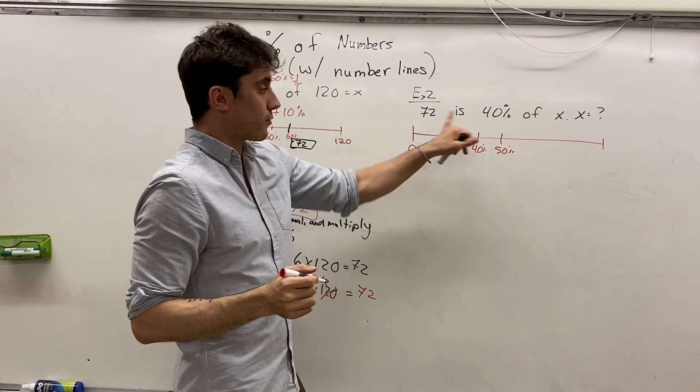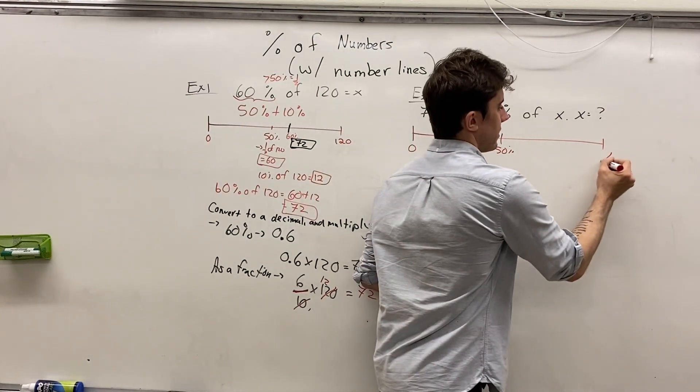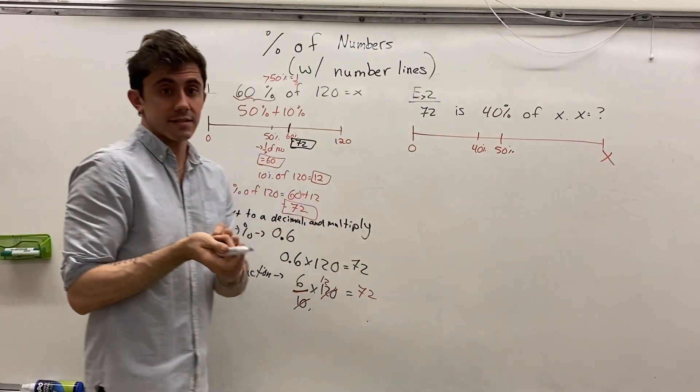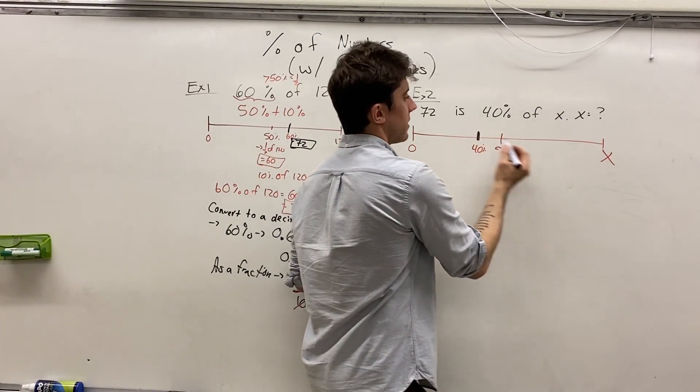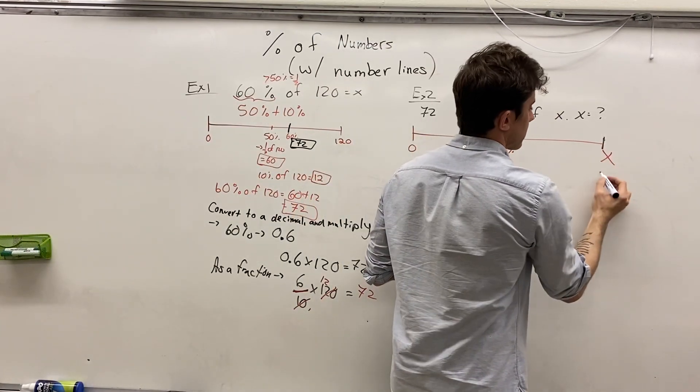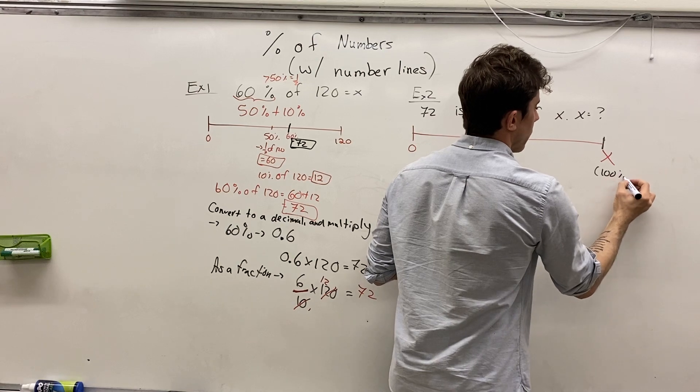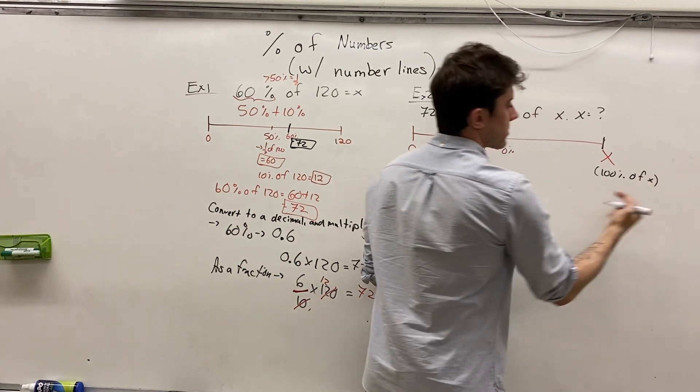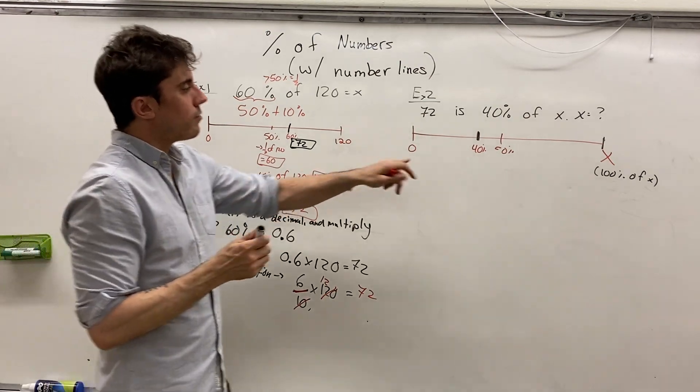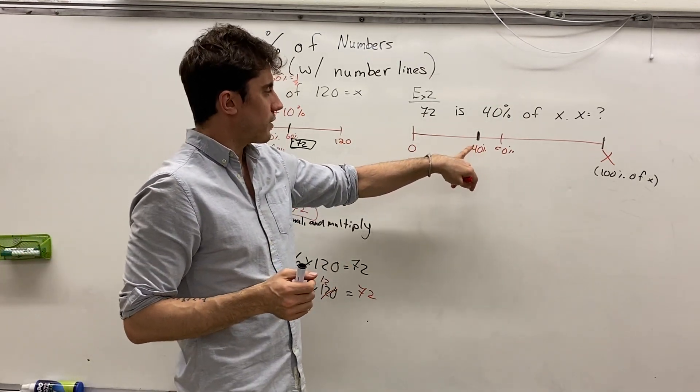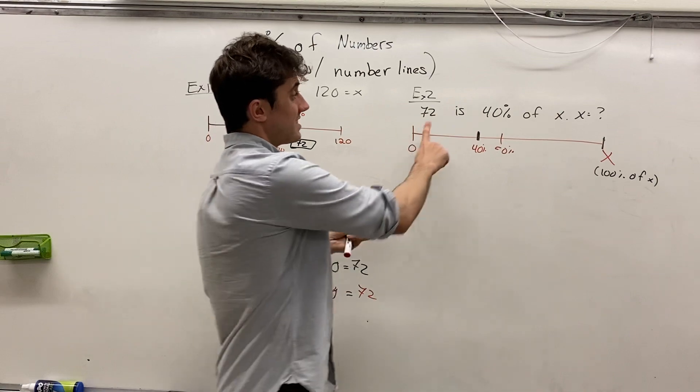Now this would be 50% in the middle. So 40% let's say lies around this part. And then 40% of x. And so that means that the value in the end is x, 100% of x. That's the same thing.